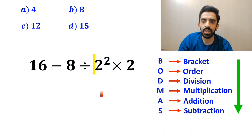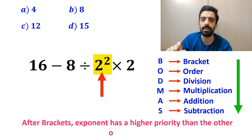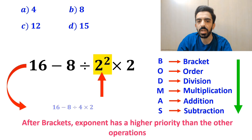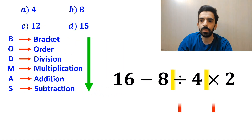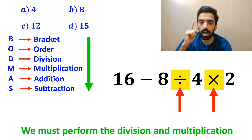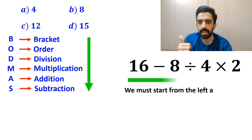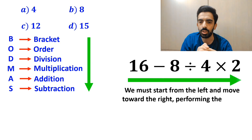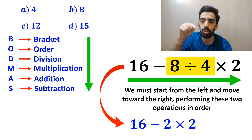In the next step, we go to the exponent, because after brackets, exponent has higher priority than the other operations. So this expression simplifies to 16 minus 8 divided by 4 times 2. Then we must perform the division and multiplication. It's really important to understand that in the BODMAS rule, multiplication and division have the same level of priority. In this situation, we must start from the left and move toward the right, performing these two operations in order. So first we do the division between 8 and 4, and this expression simplifies to 16 minus 2 times 2.